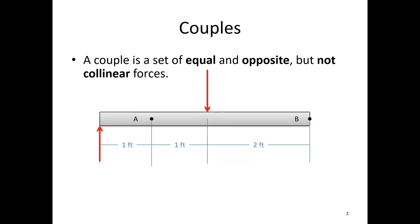So here we've got a beam. I've got one force going up, one force going down. They're going to have the same magnitude, opposite directions, but they cannot line up. So here they're kind of off-center from one another, so this is an example of a couple.